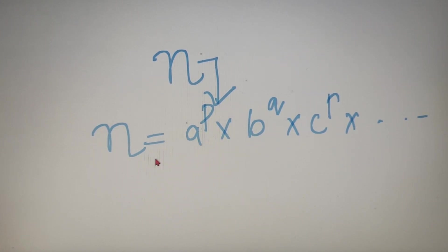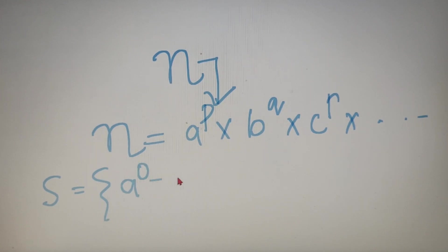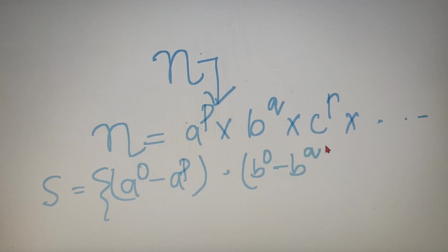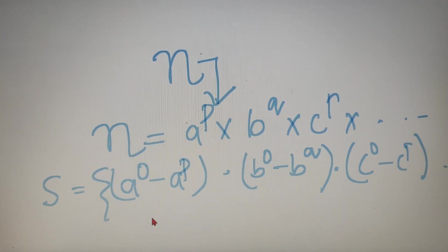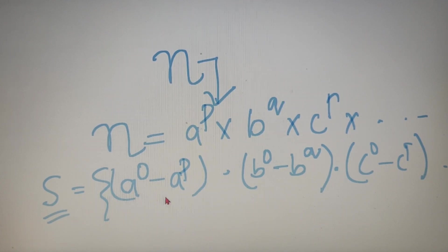Now done with the prime factorization, we can simply calculate the sum of factors using the formula: S is equal to the sum of all values from a⁰ to aᵖ, multiplied by the sum of all values from b⁰ to b^q, multiplied by the sum of all values from c⁰ to c^r, and so on. This product of sums will give you the sum of factors for the number n. Now let's solve a few examples so that you will get a clear idea of this concept.